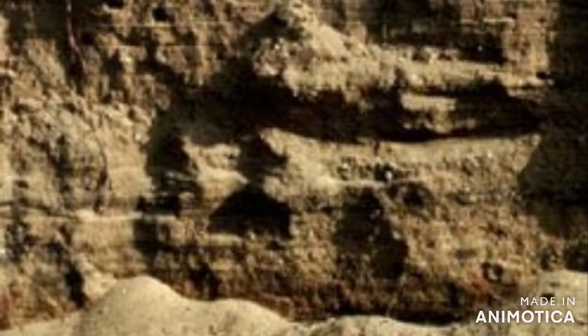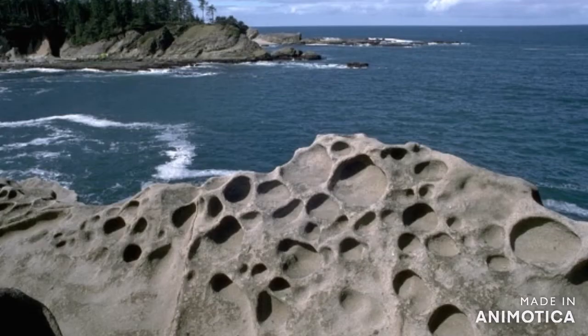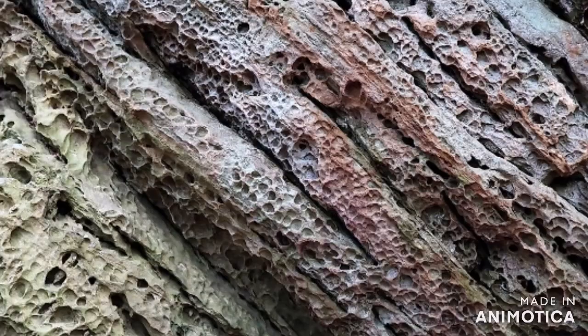Now let's see what is chemical weathering. Chemical weathering occurs when rocks are broken down by chemical reactions. These reactions include oxidation, hydrolysis, and carbonation.